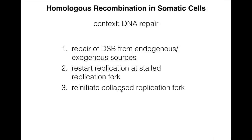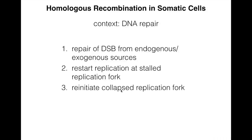It requires homologous recombination to fix these. And finally, we can also have homologous recombination to maintain the telomere in the absence of telomerase, because our somatic cells don't have telomerase. If they do, they become cancerous. But we can use homologous recombination to maintain some of that telomere structure.